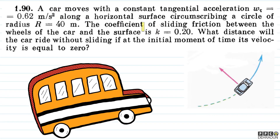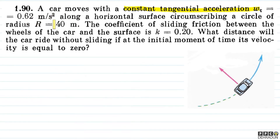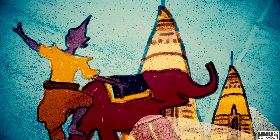The question says: a car moves with a constant tangential acceleration w_τ equal to 0.62 m/s² along a horizontal surface, circumscribing a circle of radius R equal to 40 m. The coefficient of sliding friction between the wheels of the car and the surface is k equal to 0.20. What distance will the car ride without sliding if at the initial moment of time its velocity is equal to 0?